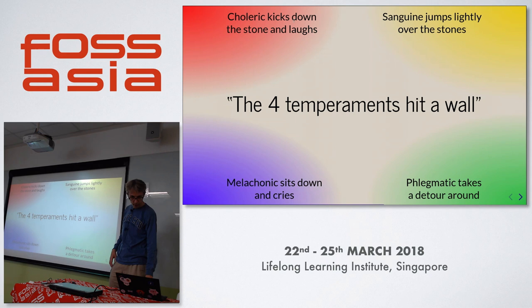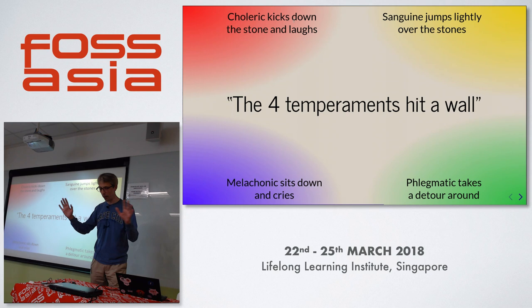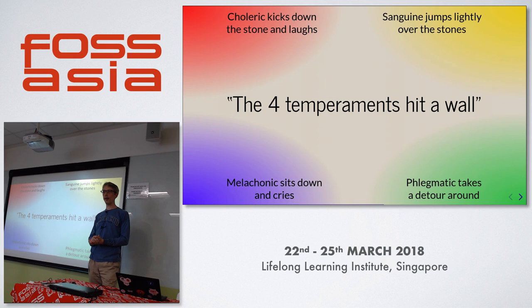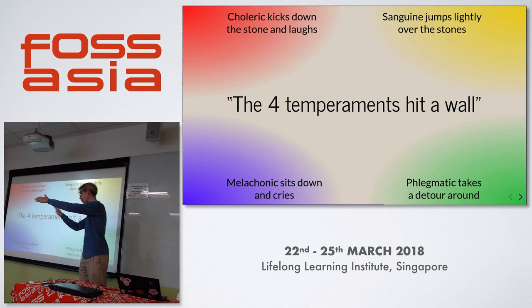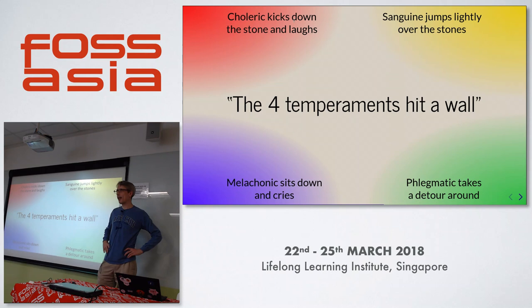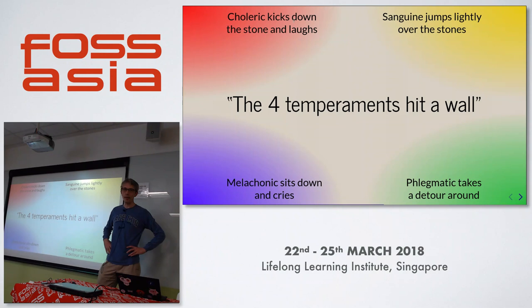Here's a little story. The four temperaments each run into an obstacle — a wall or a large collection of stones. The Melancholic breaks down crying and gives up in despair, sitting in front of the obstacle. The Phlegmatic takes a detour, flowing around it. The Sanguine lightly jumps over the wall and proceeds happily. And the Choleric just kicks down the stones and laughs and moves on. Quite different reactions to problems.